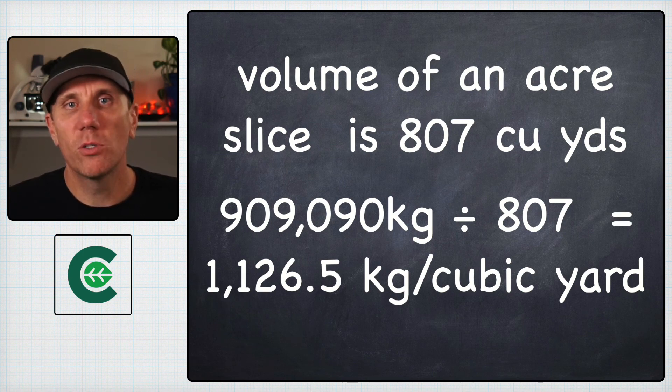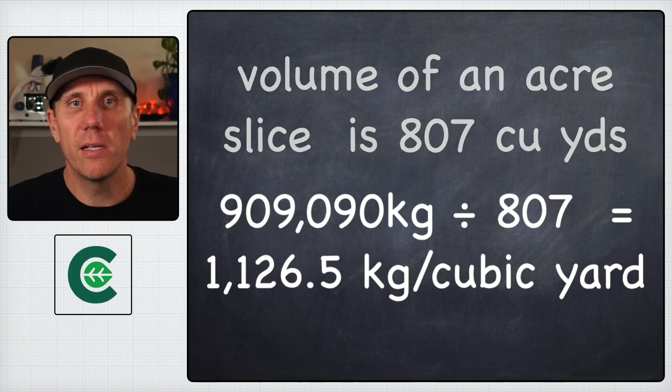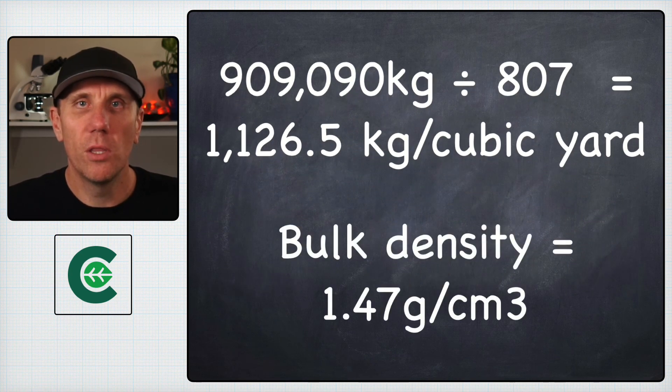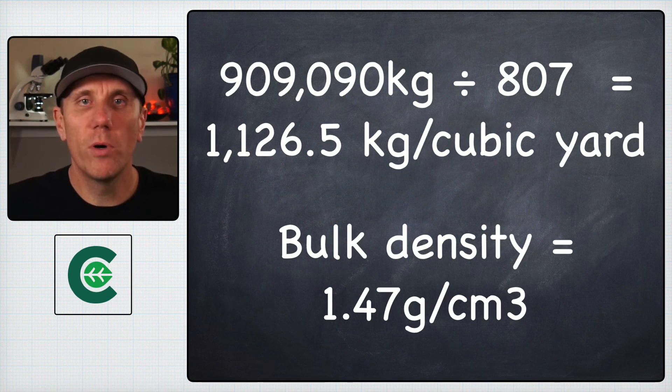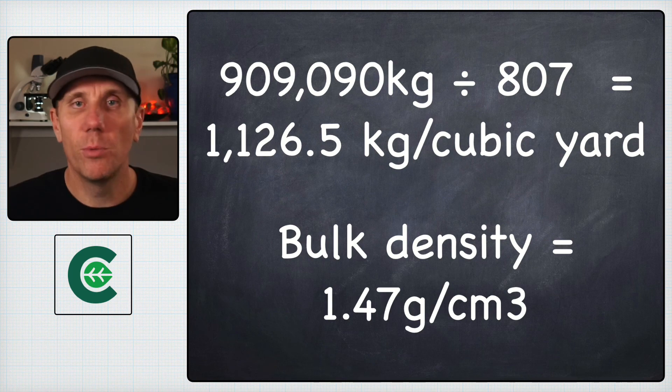Once we have the weight of our soil in a cubic yard, it's easy to translate it into cubic centimeters, so the bulk density of an acre slice is 1.47 grams per cubic centimeter.